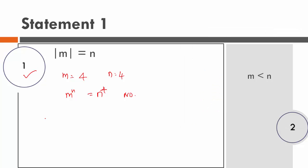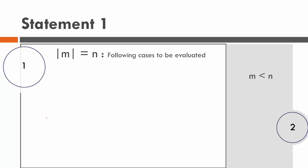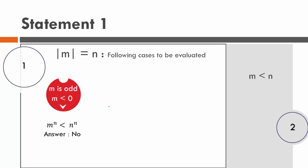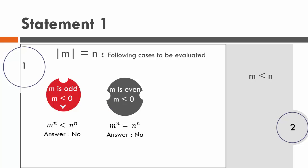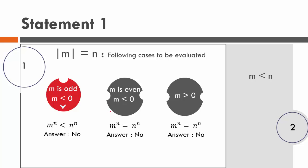To recap Statement 1 — modulus of m equals n. Case 1: m is odd and negative — m power n is less than n power n, answer is no. Case 2: m is even and negative — m power n equals n power n, answer is no. Case 3: m is positive — m power n equals n power n, answer is no. The answer is a uniform no, therefore Statement 1 is sufficient.